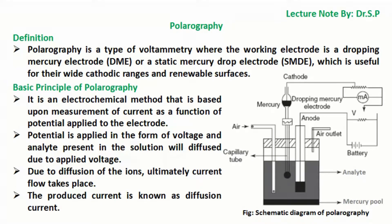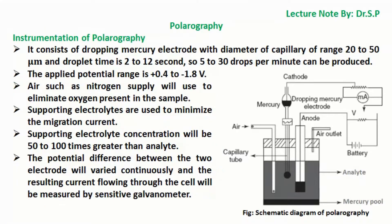Basic principle of polarography: it is an electrochemical method based upon measurement of current as a function of potential applied to the electrode. Potential is applied in the form of voltage, and the analyte present in the solution will diffuse due to the applied voltage. Due to diffusion of the ions, current flow takes place, and the produced current is known as diffusion current.